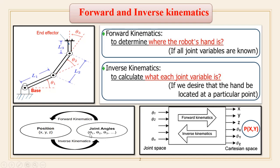In inverse kinematics, you have to find out the joint angles. In forward kinematics, all joint space parameters are given — theta1, theta2, theta3 — along with the different link lengths. You find out the unknown Cartesian space position, Px and Py. In inverse kinematics, the Cartesian space coordinates x, y, and z are given, and you have to find out the joint angles theta1, theta2, and theta3.